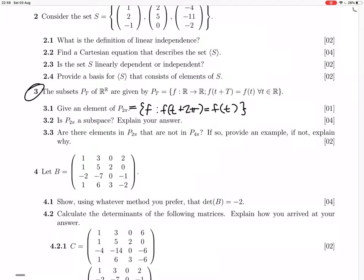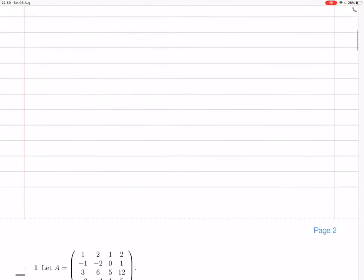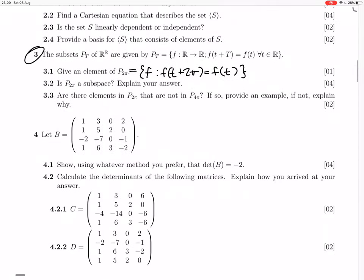So, a function that's 2π periodic, sine is such a function. So, 3.1, we can say sine.